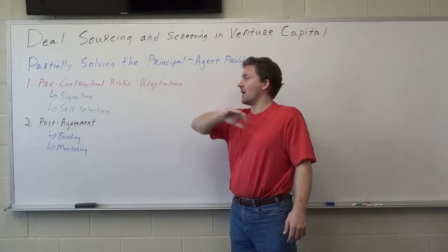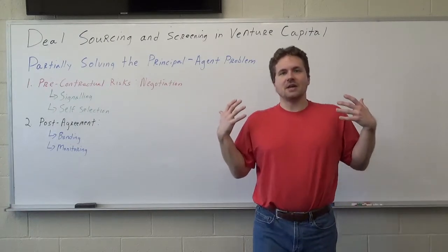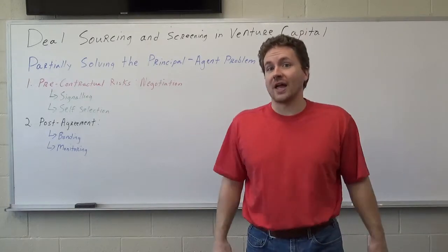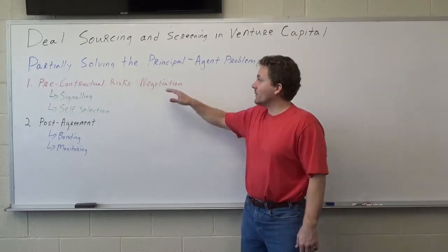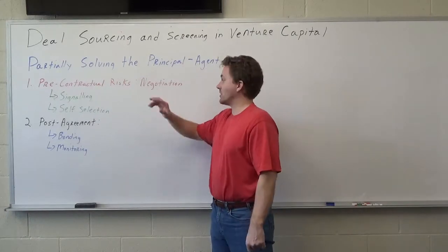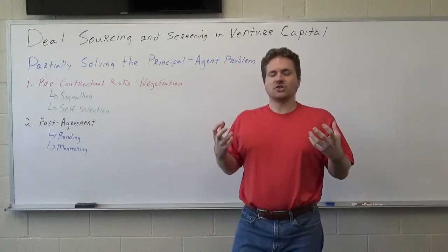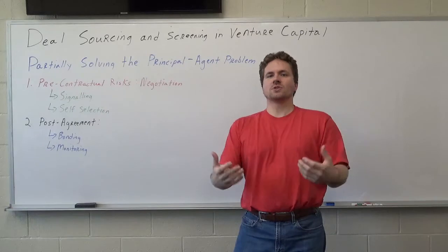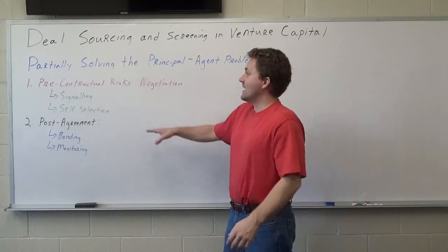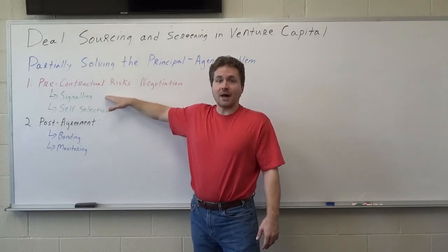The first area covers pre-contractual risks. We talked about some of the hidden characteristics you face before making an agreement — pre-contractual information asymmetry. The first tool to address this is signaling. Signaling means providing the right kind of message that shows confidence — it shows that you as the entrepreneur know what you're doing. Signaling is a mechanism normally used by entrepreneurs.